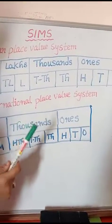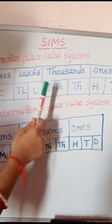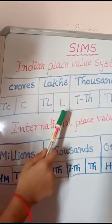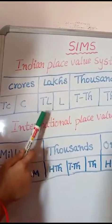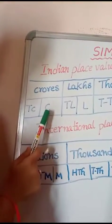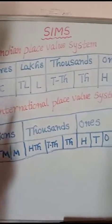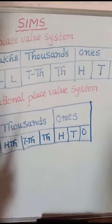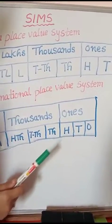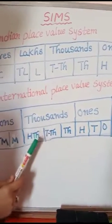Thousands have 2 places: Thousand and Ten Thousand. Lakhs have 2 places: Lakh and Ten Lakh. Crores have 2 places: Crore and Ten Crore.